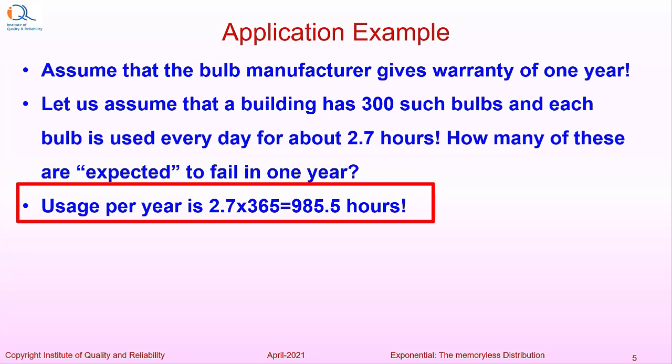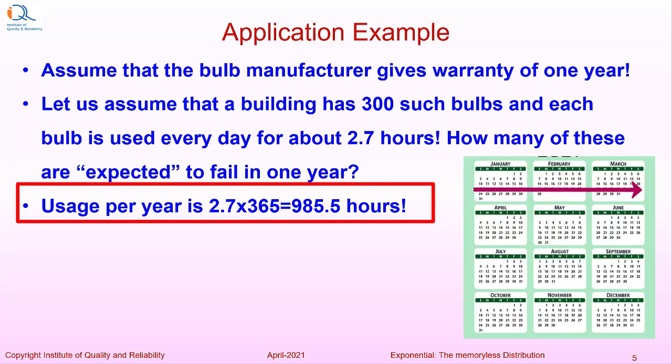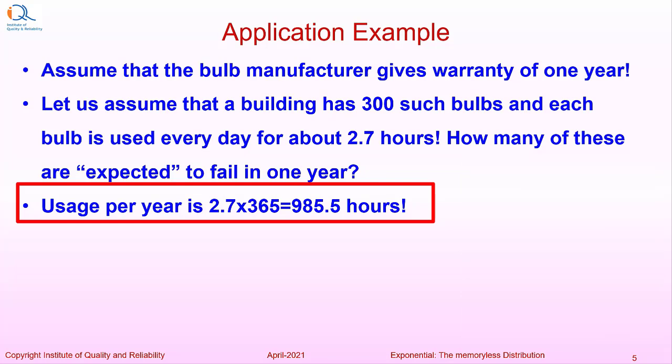Usage per year is 2.7 x 365 that is equal to 985.5 hours. So we will use the exponential distribution reliability function now.